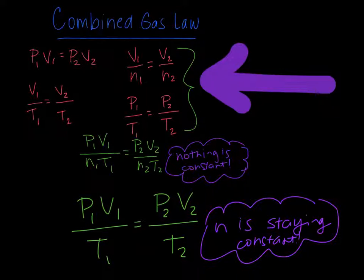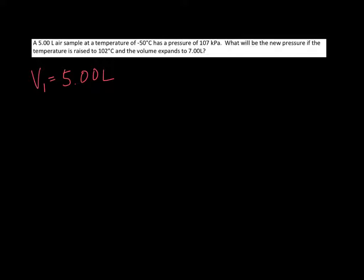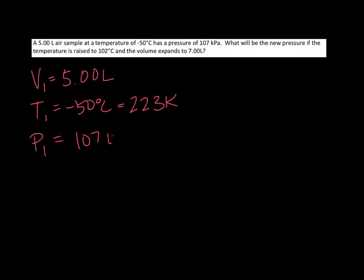Let's look at a couple of examples. We've got a 5-liter air sample at a temperature of negative 50 degrees Celsius and a pressure of 107 kilopascals. What will the new pressure be if the temperature is raised to 102 degrees and the volume expands to 7 liters? My first volume is 5 liters, my first temperature is negative 50°C, which is 223 Kelvin, and my first pressure is 107 kilopascals. Since moles is staying constant, the law involved is PV over T.